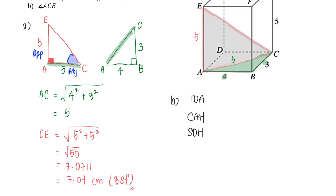Given SOHCAHTOA, I have my opposite and adjacent. I'm going to use my tangent ratio. Tangent of angle ACE equals opposite over adjacent.